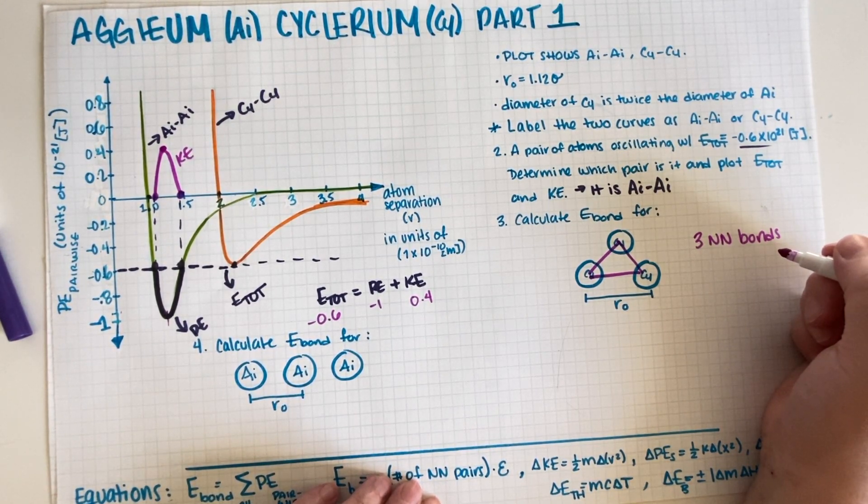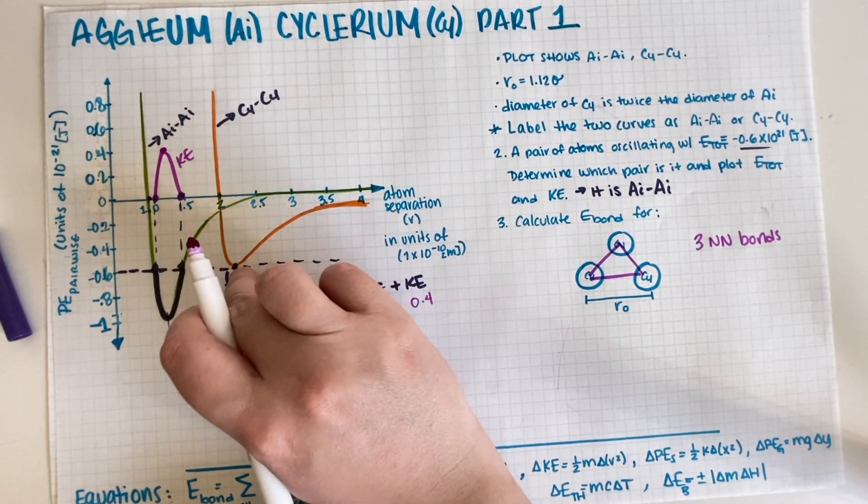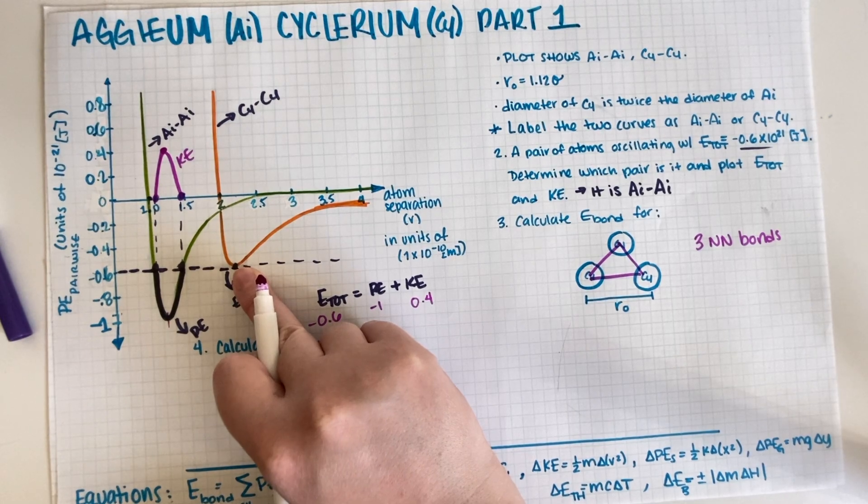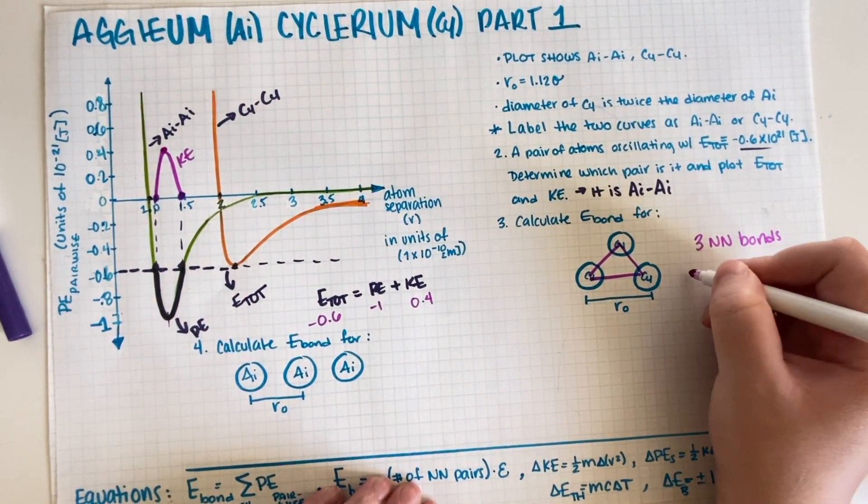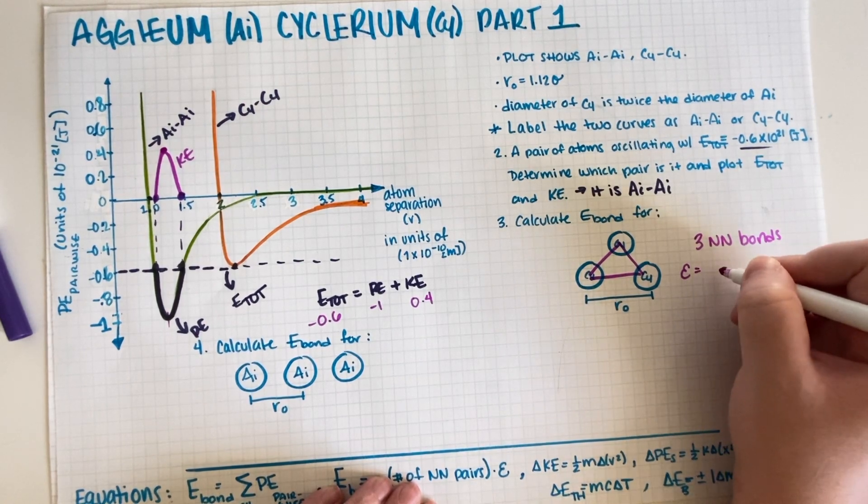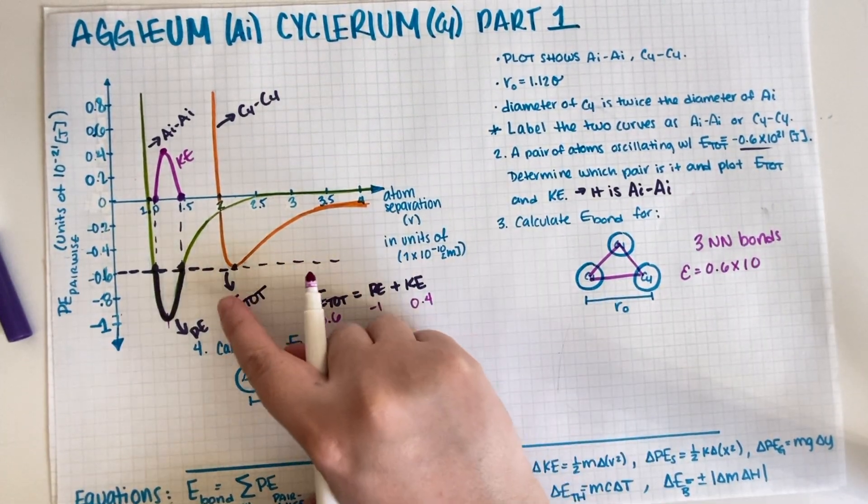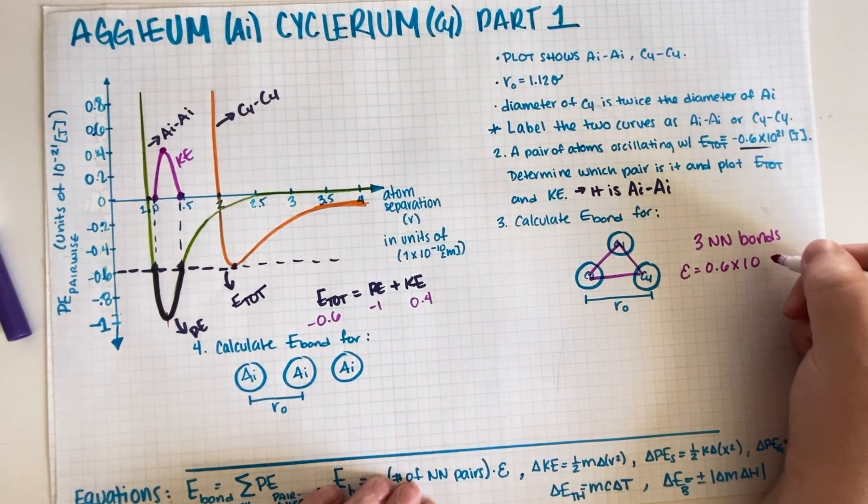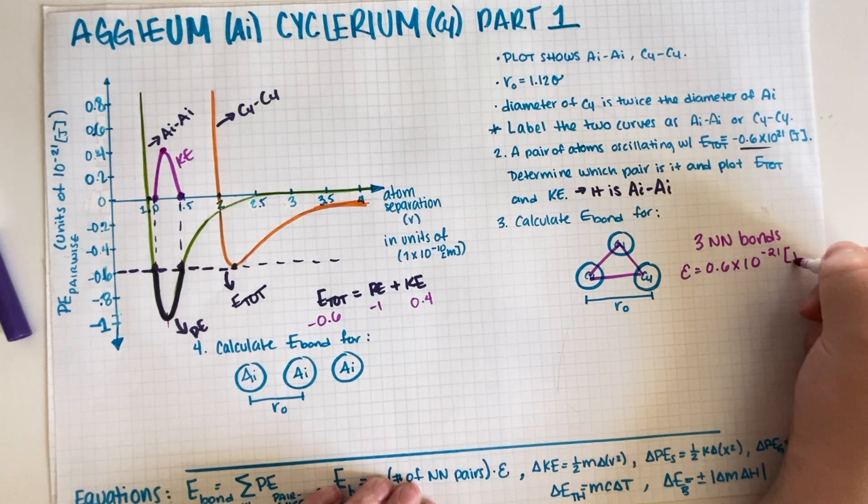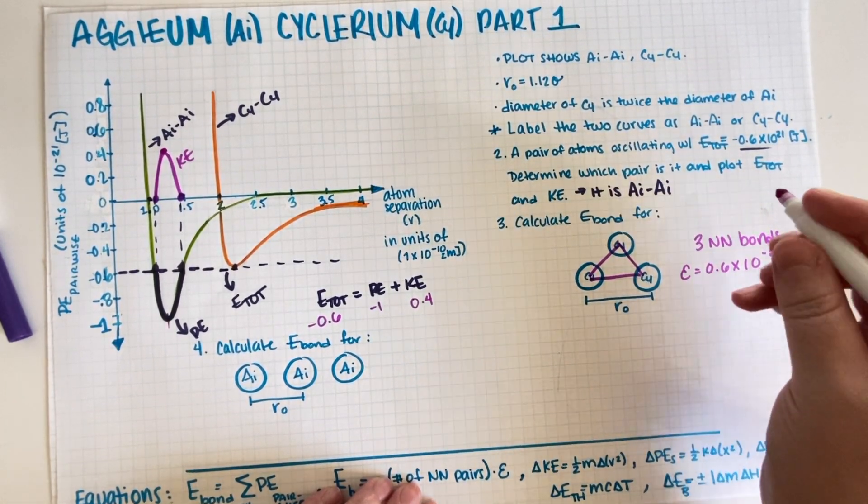And how much energy do we have per bond? So this is Cy-Cy, so that would be -0.6. So the energy for the nearest neighbor is -0.6 × 10⁻²¹ joules.